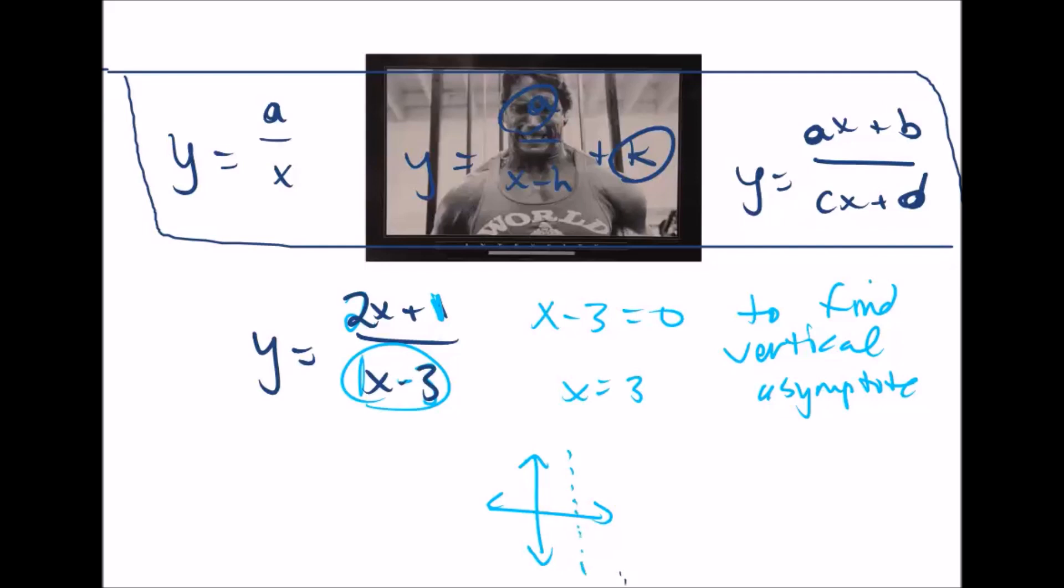That's because this is not part of the domain. If you plug in 3 to this equation, you will get some number where you'll be dividing by 0 on the bottom, which you know is never allowed. You've known that for a long time.